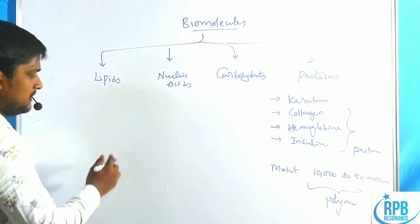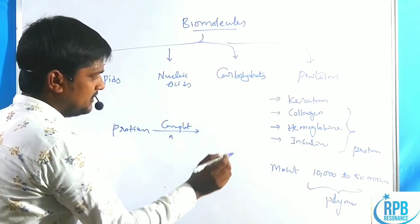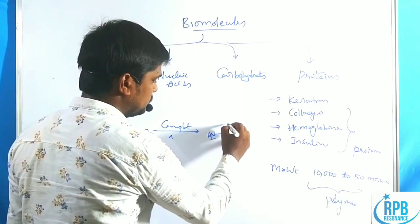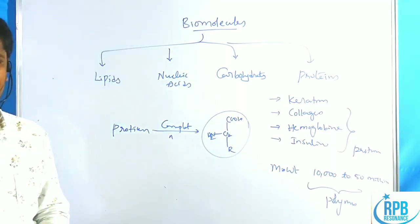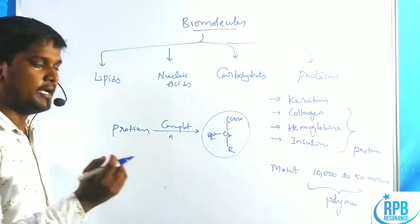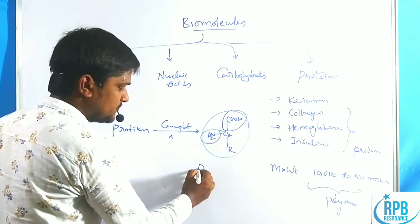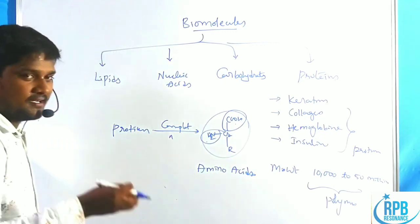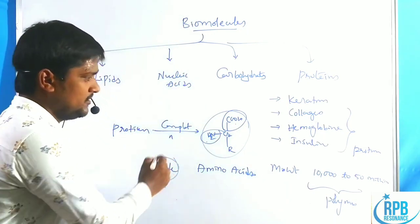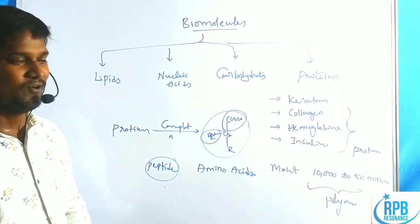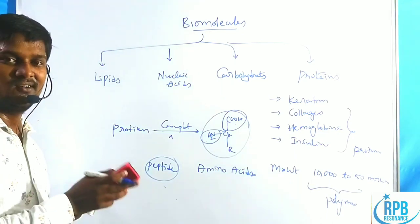Whenever proteins undergo complete hydrolysis, they give compounds having one NH2 group and one COOH group. Those compounds having an amine group as well as an acid group are called amino acids. This indicates that proteins are made up of several types of amino acids through peptide linkage. So simply, proteins are called polymers of amino acids. Today our lecture is on amino acids.